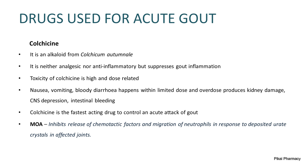The first drug we'll discuss for acute gout is colchicine, an alkaloid obtained from Colchicum autumnale. Colchicine is neither analgesic nor anti-inflammatory, but it suppresses gout inflammation very effectively. However, its toxicity is high and dose-related. Side effects include nausea, vomiting, and bloody diarrhea at limited doses, while overdose can produce kidney damage, CNS depression, and intestinal bleeding.